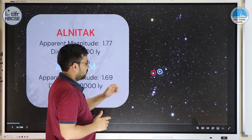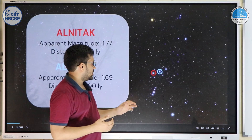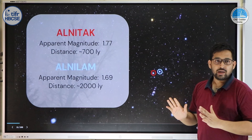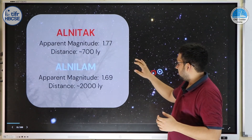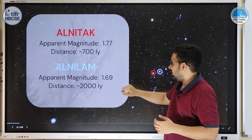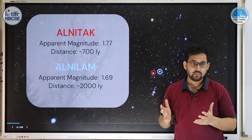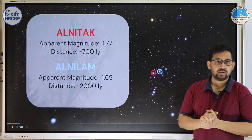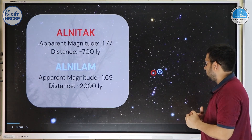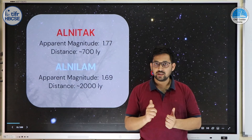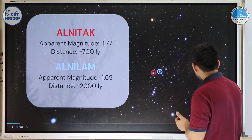Magnitude can span from very negative values to very large positive values — it need not be confined to 1–6 as Hipparchus defined. A smaller value always means higher brightness. Returning to the Orion constellation: the belt stars Alnitak and Alnilam both have magnitudes around 1.77 and 1.69 respectively, appearing roughly the same brightness. However, Alnitak is about 700 light-years away and Alnilam is about 2000 light-years — roughly three times the distance. So they clearly cannot have the same intrinsic brightness.